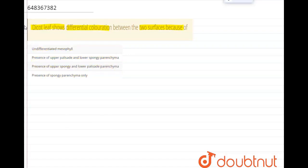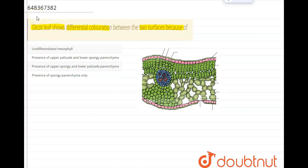Let us analyze the options with the help of a diagram. So, here is the diagram of LS of a dicot leaf. Okay? Now, if you see the structure, these cells that are arranged here under the epidermis are the palisade parenchyma.